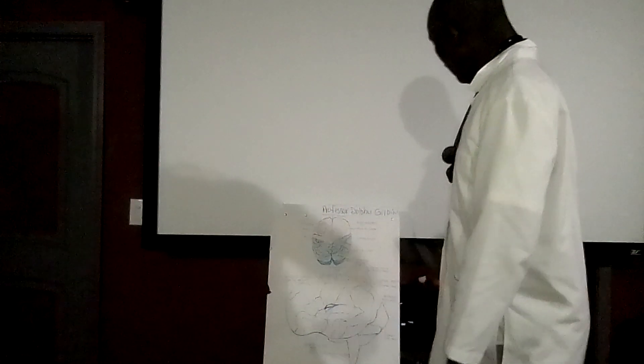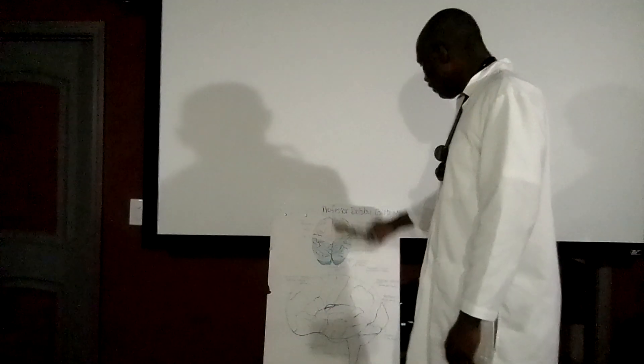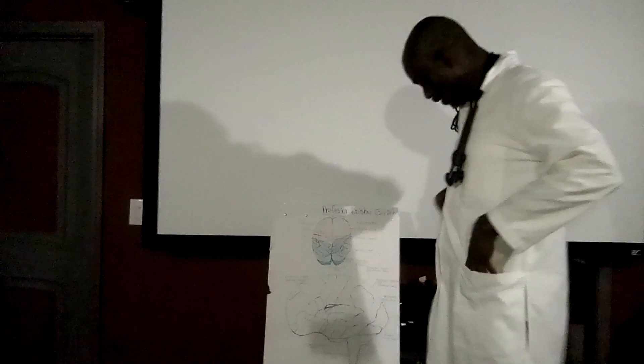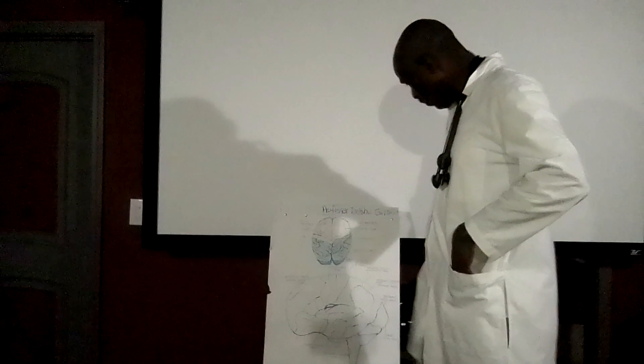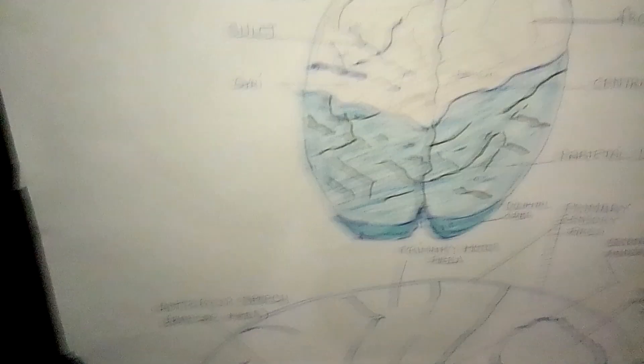Here we have a diagram of the brain showing the left and right hemisphere. Let's give you a more magnified look at it — neuroanatomy for the brain.